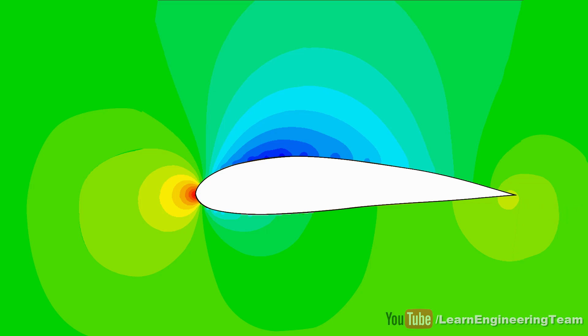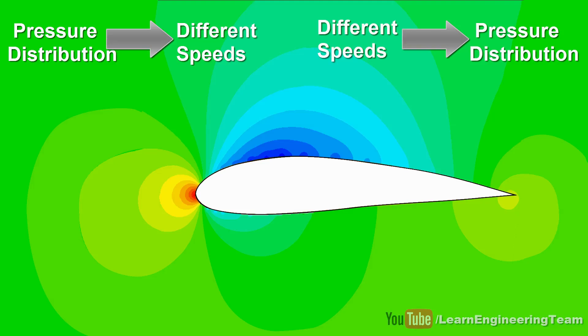In short, for this particular problem, the pressure distribution makes the particles flow at different speeds, but the reverse argument does not hold. The different speeds of the particles are not what make the pressure distribution.